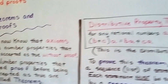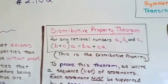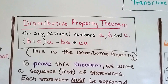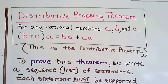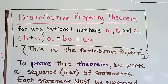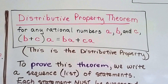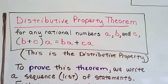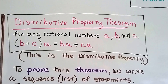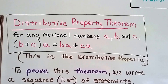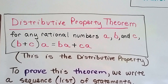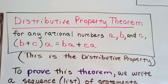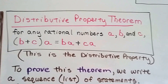We've talked about the distributive property before. Here's a distributive property theorem: for any rational numbers a, b, and c, (b + c) with a on the outside is going to equal ba + ca, because the a gets distributed to the b and the c with the plus sign in the middle. This is basically the distributive property.